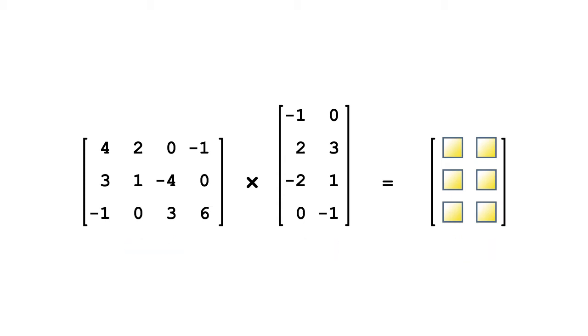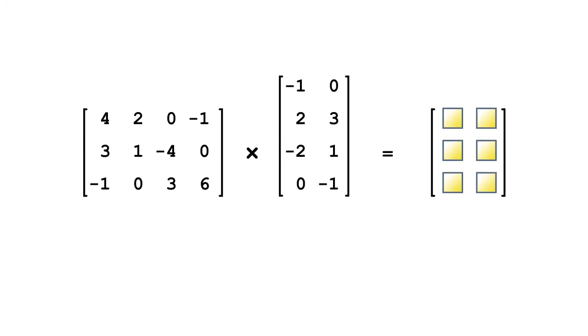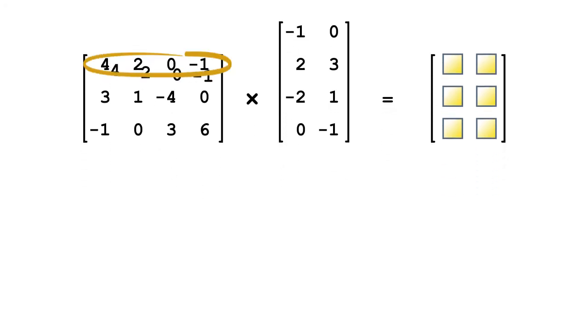Now, let's look at how we carry out the multiplication itself. Each element of the first row of the left matrix is multiplied by the corresponding element of the first column of the right matrix. We then add the results together to get the element in the first row and first column of the final matrix.